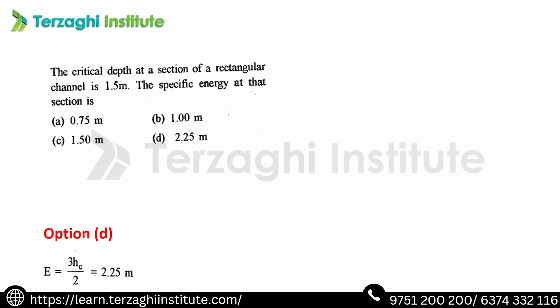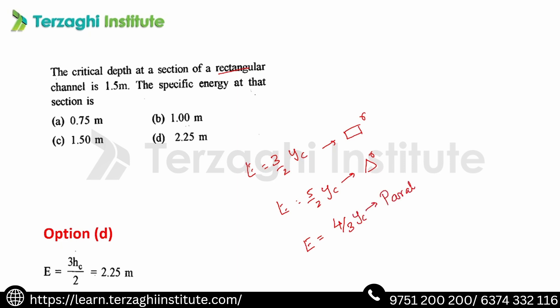The critical depth at a section of a rectangular channel is 1.5 meters. The specific energy at that section is calculated using the rectangular channel formula. The critical depth yc is equal to 1.5 meters. Using the specific energy formula for a rectangular channel, we can obtain the required values.